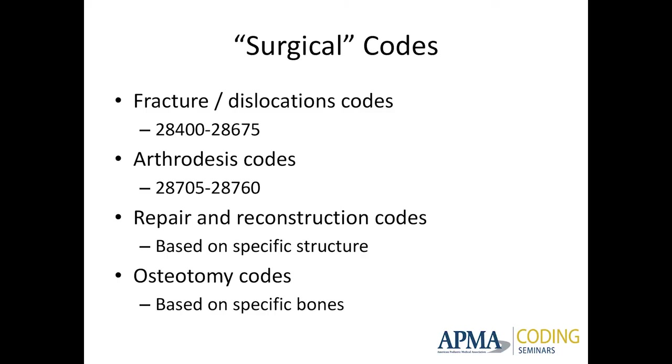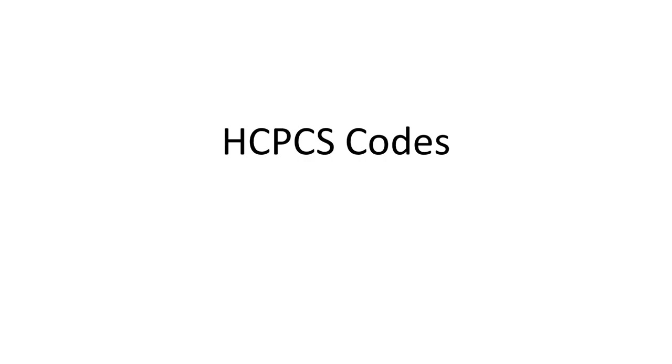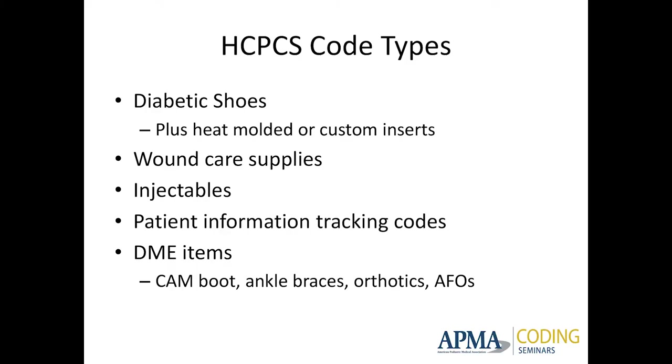The arthrodesis codes depend on which joint you're fusing. HCPCS codes: you get diabetic shoes or HCPCS codes with inserts. Wound care supplies — if you're dispensing wound care supplies from your office, they fall under DME or HCPCS codes. Injectables: if you're doing a steroid injection with ultrasound guidance in a joint, you get one code for the injection and the ultrasound guidance. But you also need to bill the injectable drug separately — though you can't bill the lidocaine or marcaine; you can't bill the anesthetic.